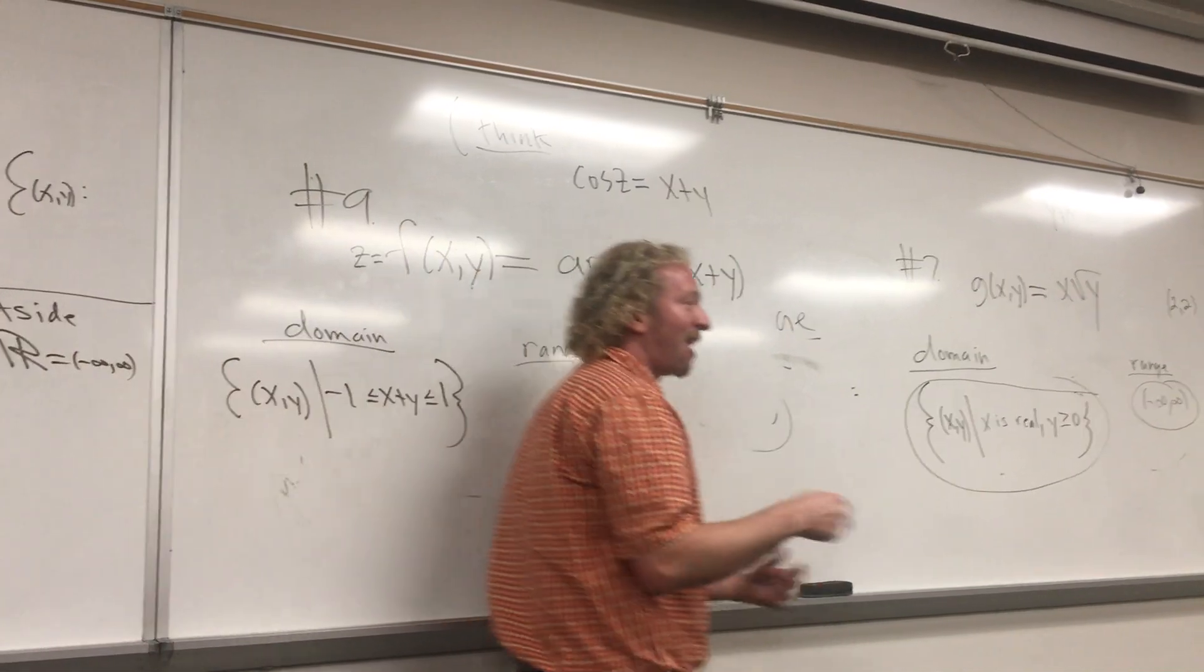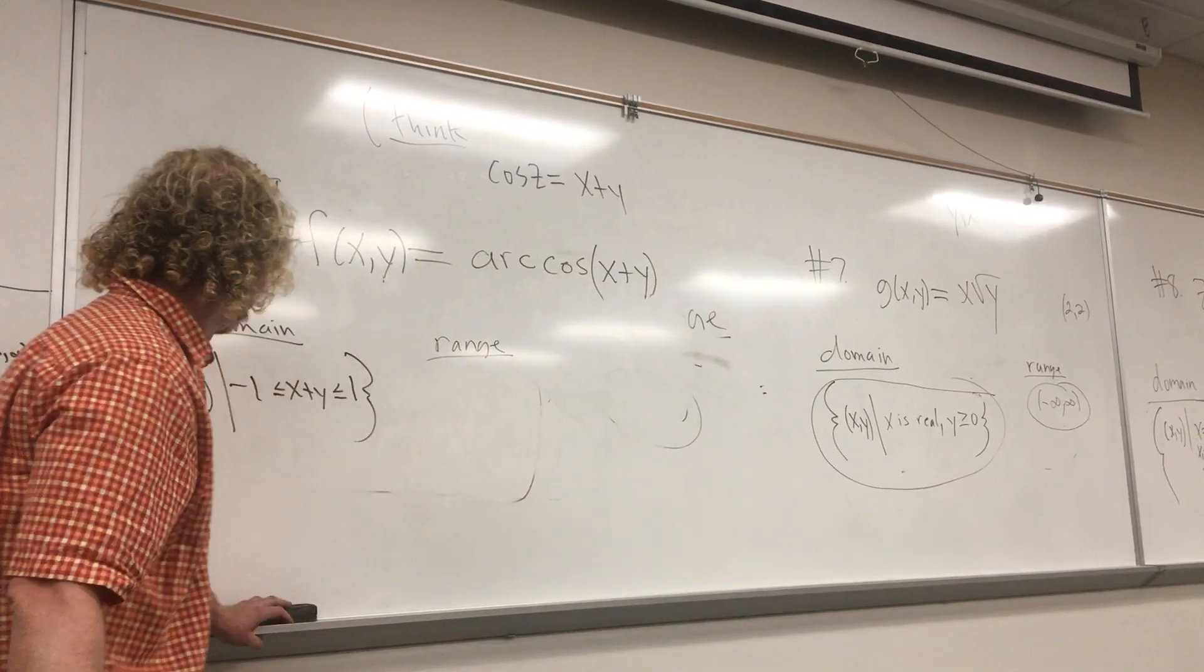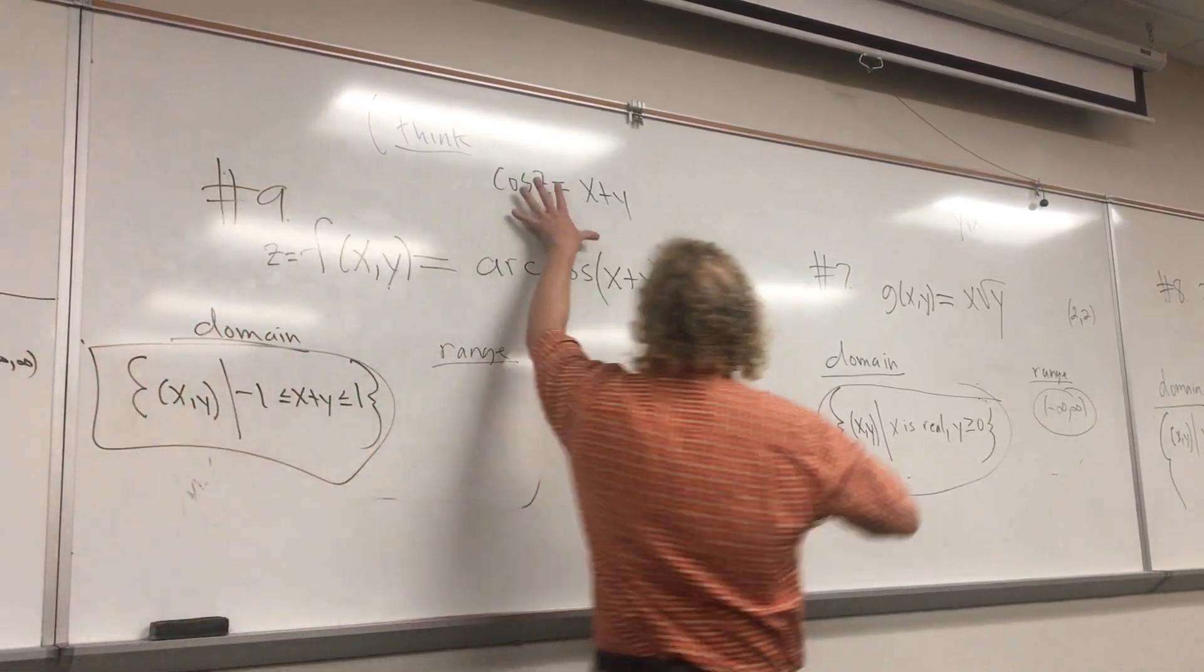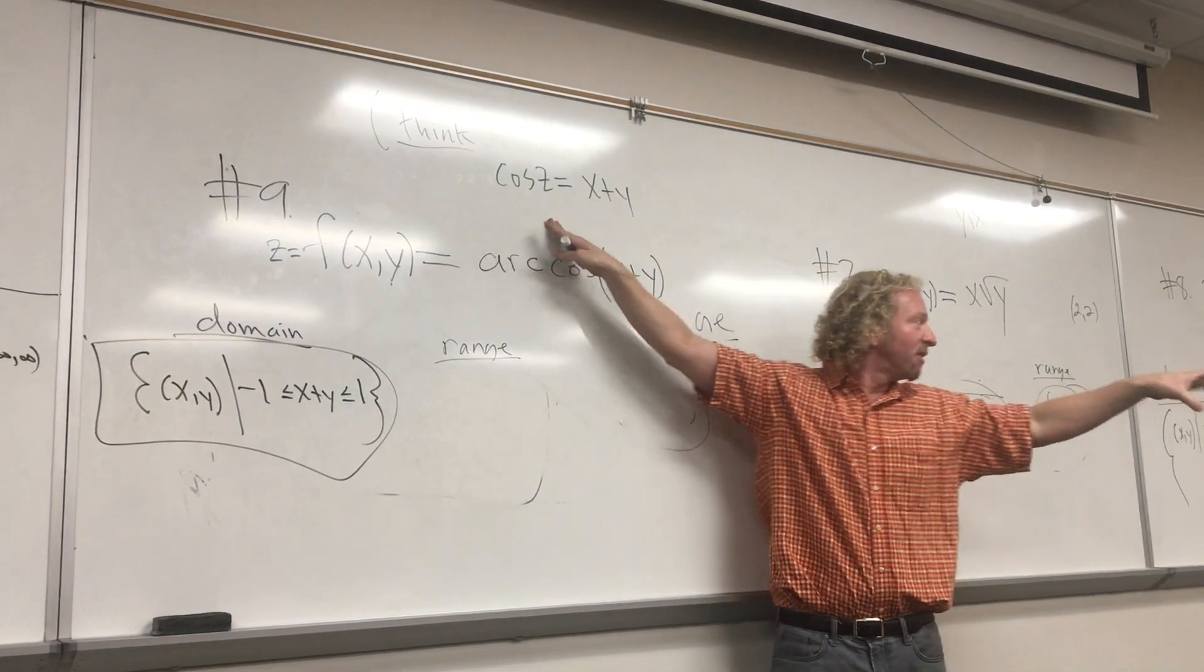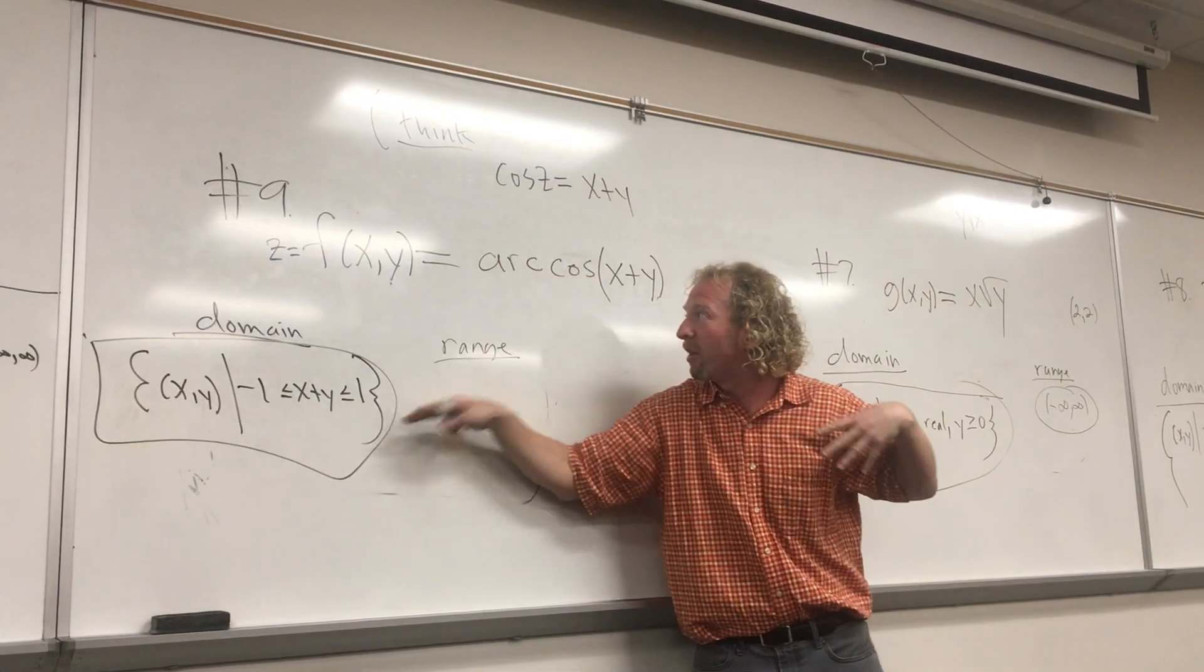I've never done this problem before, but I looked at it when I assigned it. I thought, oh, this is cool. It's kind of fun to do it. Yeah. It worked out. So again, if you just think about this, cosine is bounded, that's the fancy word, right? Between negative one and one. So x plus y is between negative one and one.